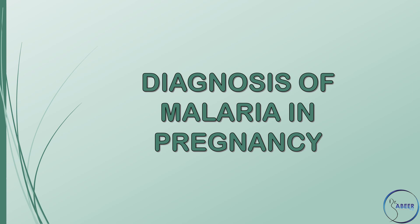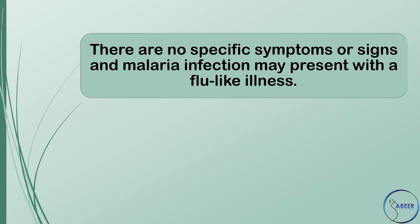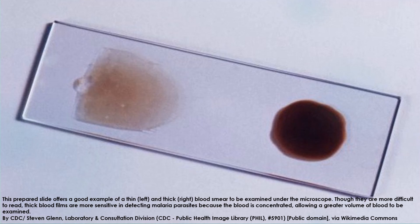Diagnosis of malaria in pregnancy — why is malaria diagnosis difficult? There are no specific symptoms or signs, and malaria infection may present with a flu-like illness. A history of travel to a malaria-endemic area should be sought in a pregnant woman with pyrexia of unknown origin. Suspicion of malaria requires prompt confirmation by malaria blood film, as there are no clinical algorithms that permit accurate diagnosis by signs and symptoms alone. In its early stages, the symptoms and signs of malaria can mimic influenza and other common viral infections.